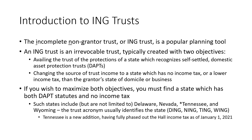So if you want to maximize both objectives, you have to find a state that has both domestic asset protection trust statutes and no income tax. The common states at the top of the bell curve that are used are Delaware, Nevada, Tennessee as of January 1st, and Wyoming. The trust situs usually identifies the state, so if you see a DING, that's a Delaware incomplete non-grantor trust. You also have NINGs for Nevada, TINGs for Tennessee, WINGs for Wyoming, and so on.